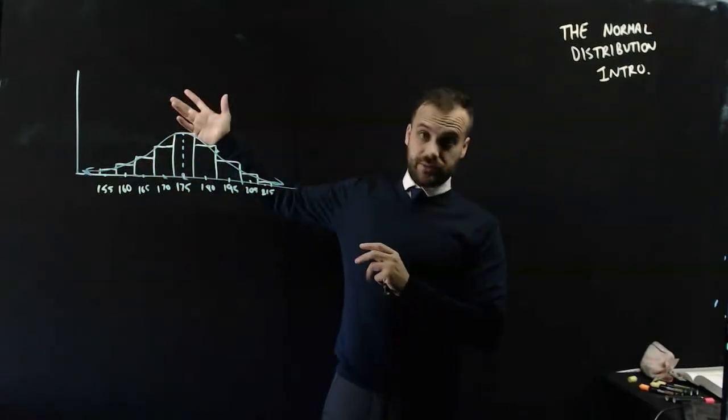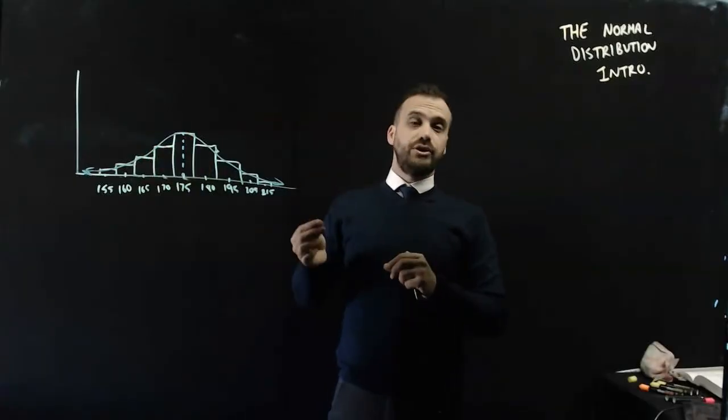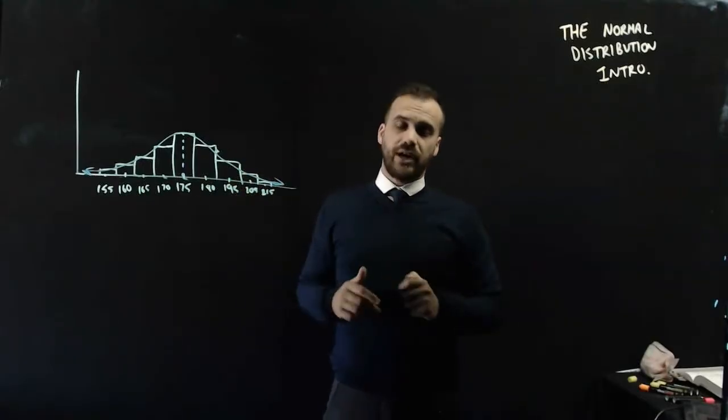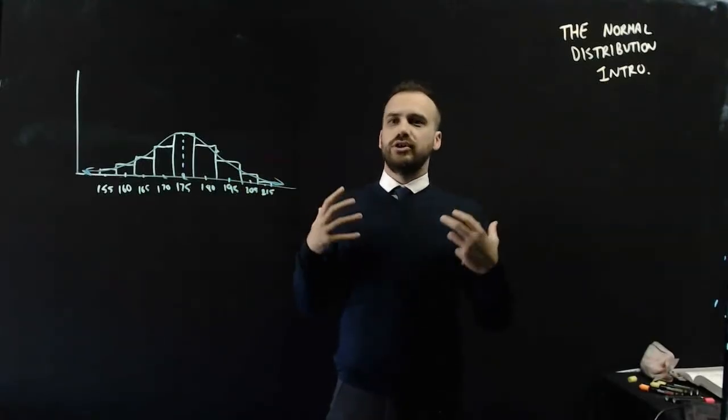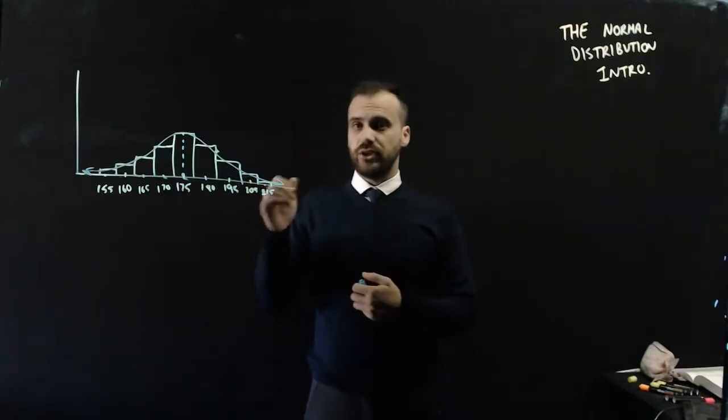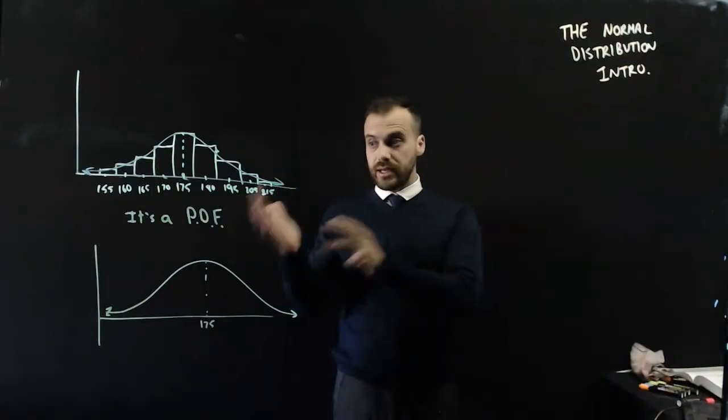Blades of grass. Go out, pick 100 blades of grass. You'll find there's very short ones, there's some very long ones, but you'll get like a middle valley. Naturally occurring continuous variables tend to follow a normal distribution.